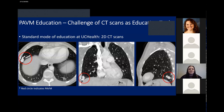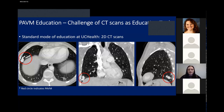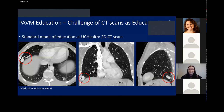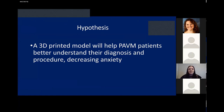Here at UC Health, the standard mode of educating patients on pulmonary AVMs is using the patient's own CT scan as a visual tool to talk through the diagnosis, the procedure, and the anatomy of the disease. However, most people aren't trained in reading CT scans, and even with the physician's narrative, it can still be a challenge to fully understand and visualize what's going on within their own body. We hypothesized that a 3D printed model will help pulmonary AVM patients better understand their diagnosis and procedure, thus decreasing their anxiety.